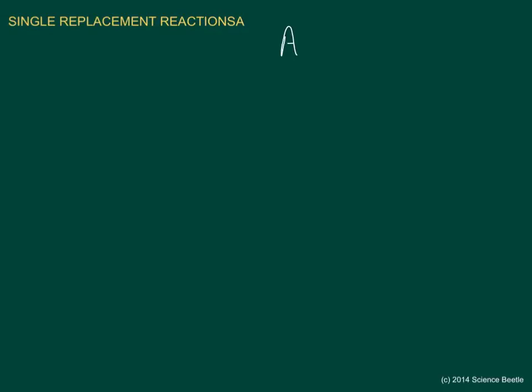Let me provide a visual using some generic equations. Typically you're going to get some element A, and it's going to react with BC. What happens is you're going to get a replacement — B in this case is going to be replaced by A, producing AC plus B. The reason this happens is because normally the first atom in a compound is always going to be the positive one. Any atom on its own usually has a charge of zero, but normally it's also going to lean towards positive. So A comes in and attaches itself to C, which has a negative charge. That's why on the product side AC is the product, and B has been replaced.